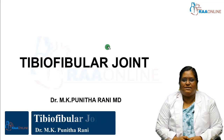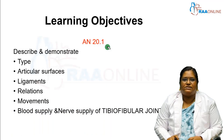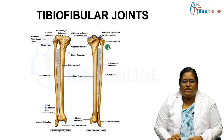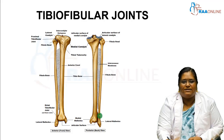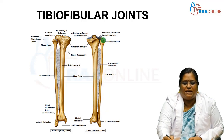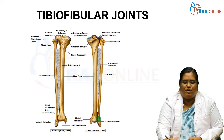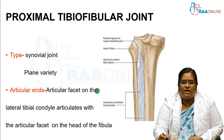Welcome to RAW Online. Today's class is about the tibiofibular joint. The learning objectives are to describe and demonstrate the type, articular surfaces, ligaments, relations, movements, and nerve supply of the tibiofibular joint. This joint is formed between the tibia and the fibula. We have three tibiofibular joints: the proximal tibiofibular joint, the distal tibiofibular joint, and in between these two, the middle tibiofibular joint.